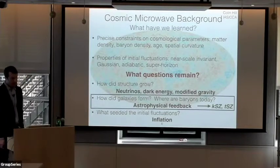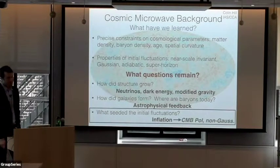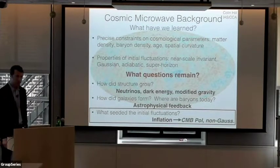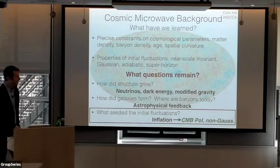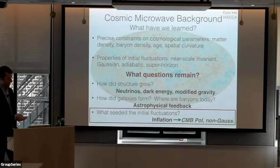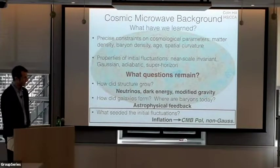The other big question is what seeded the initial fluctuations that gave rise to structure in the universe. We think inflation was responsible. We still haven't seen the signature of primordial gravitational waves, but the facilities I'll talk about will yield transformative constraints by looking for the primordial B-mode polarization in the CMB.